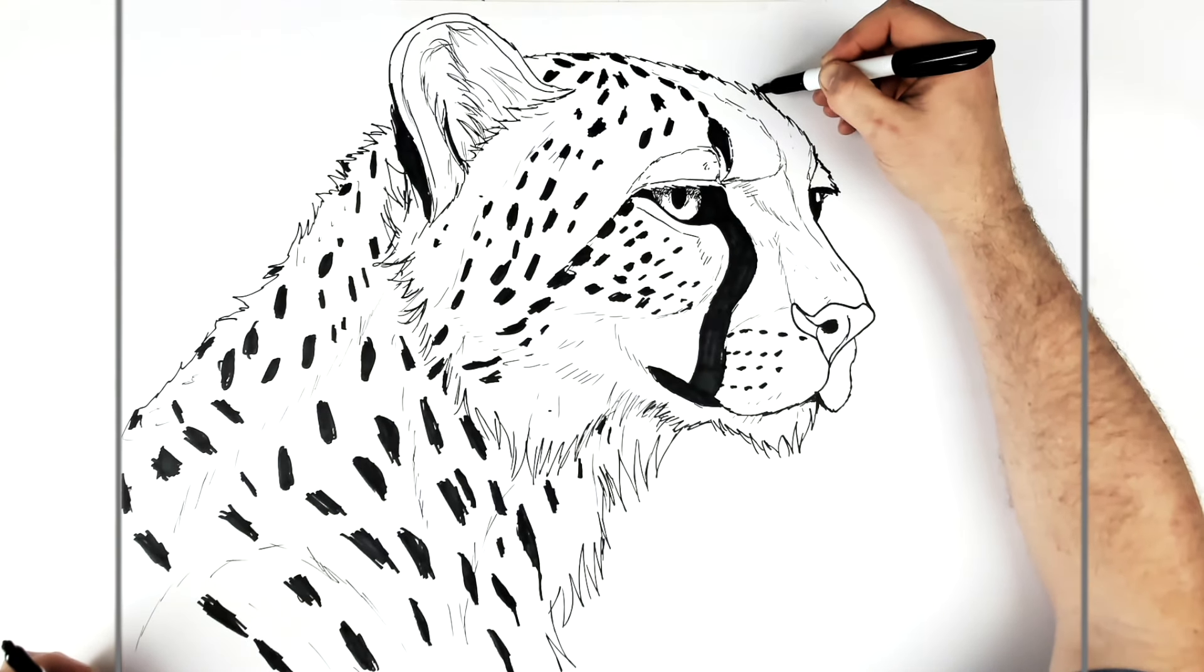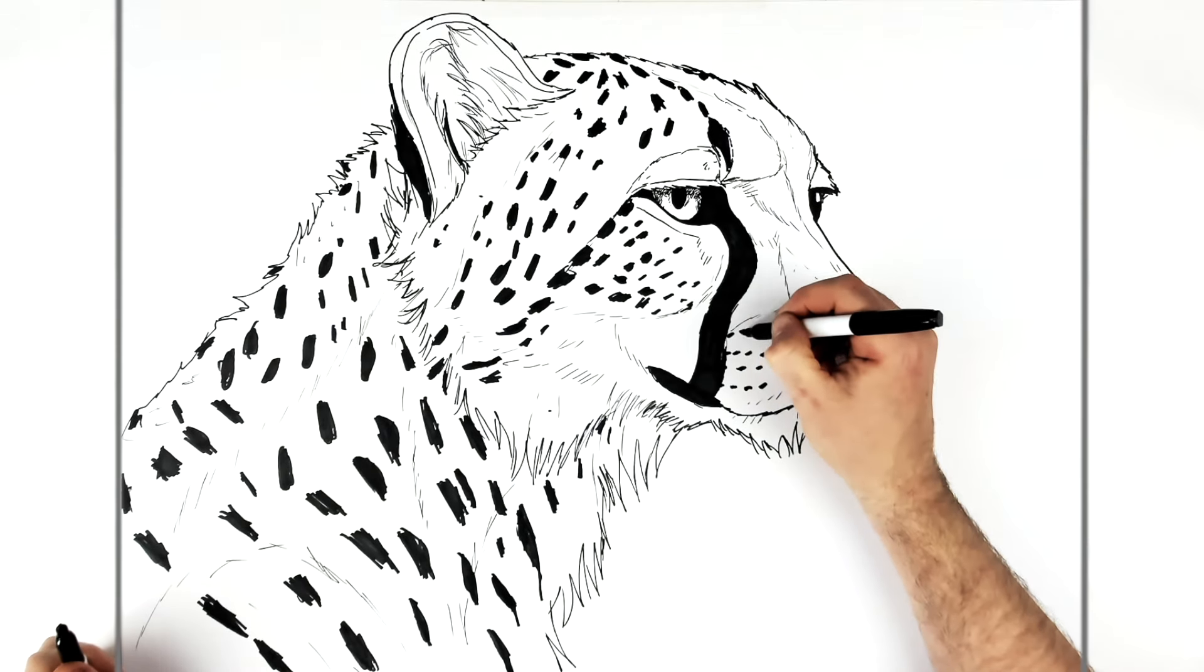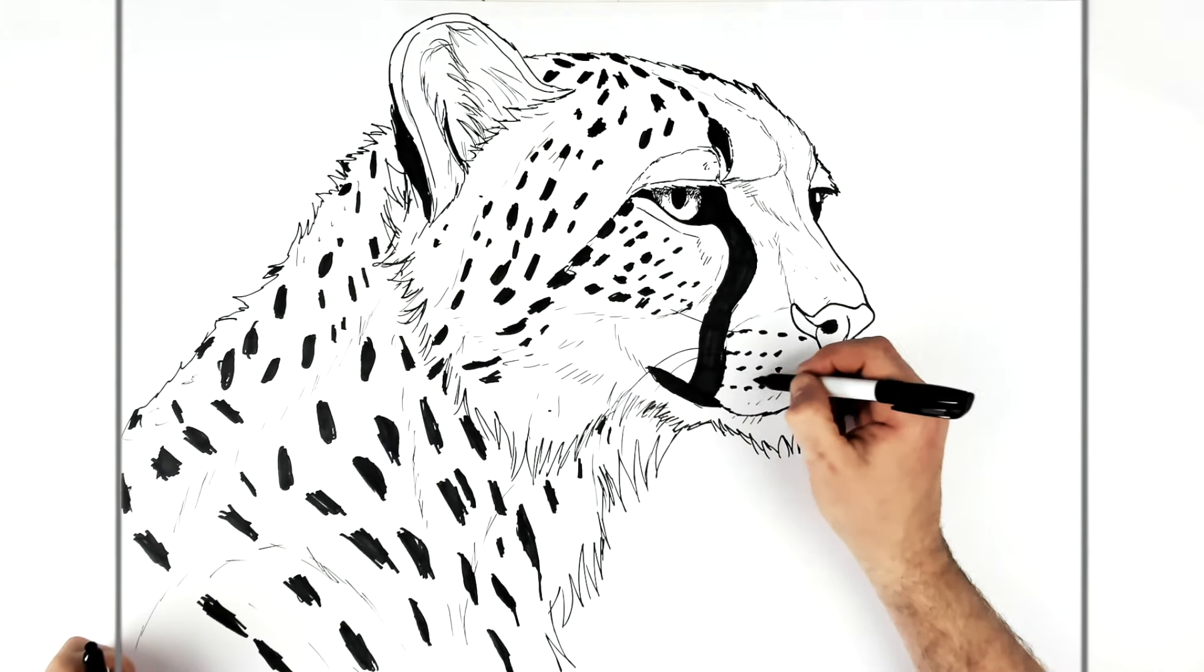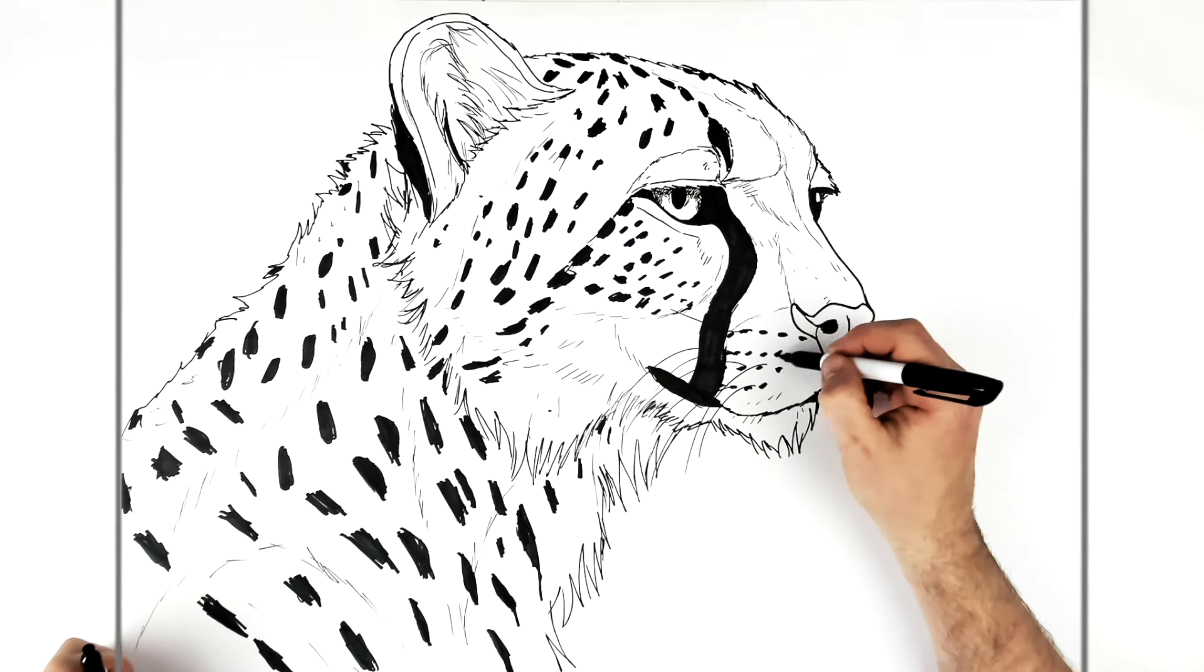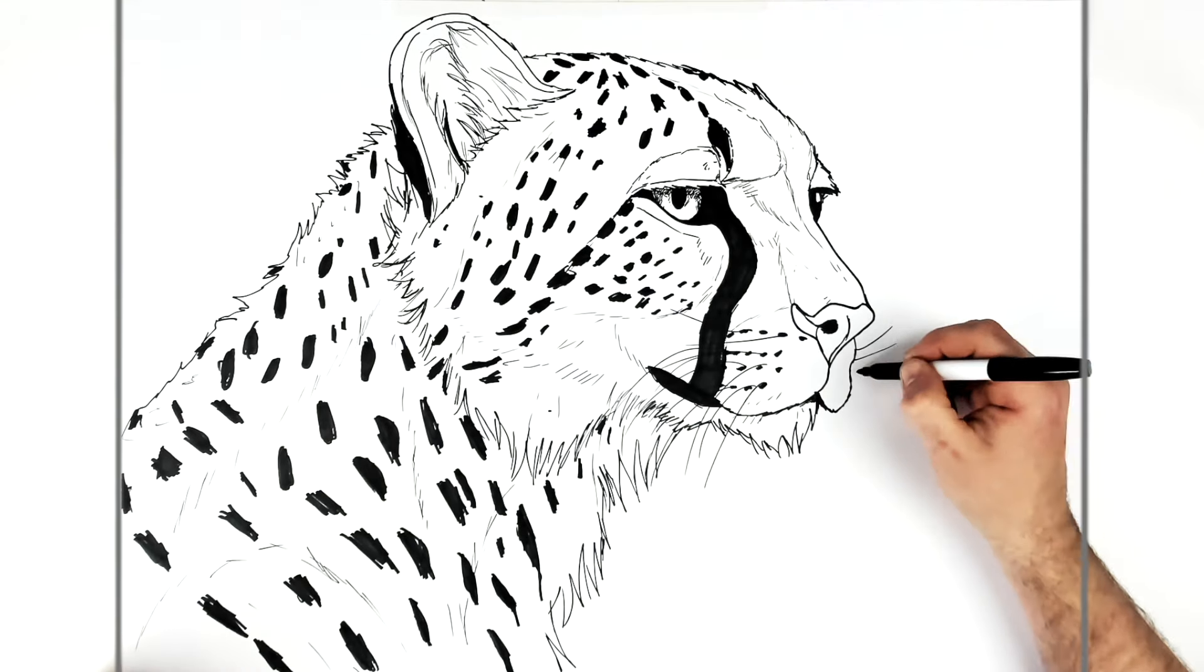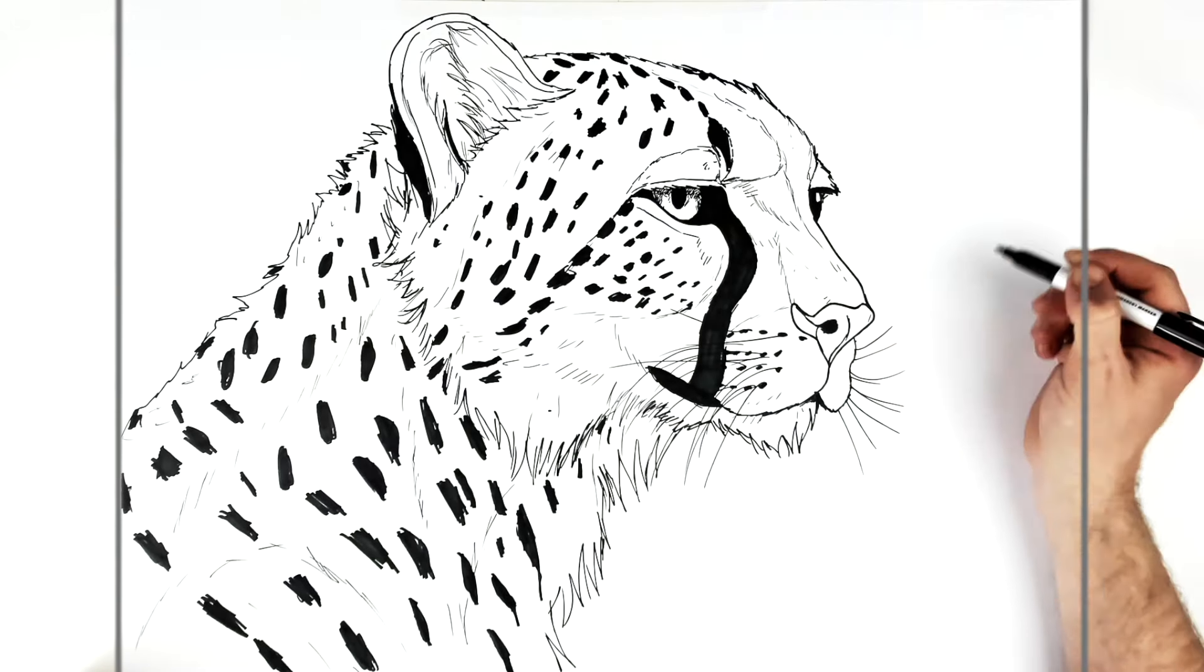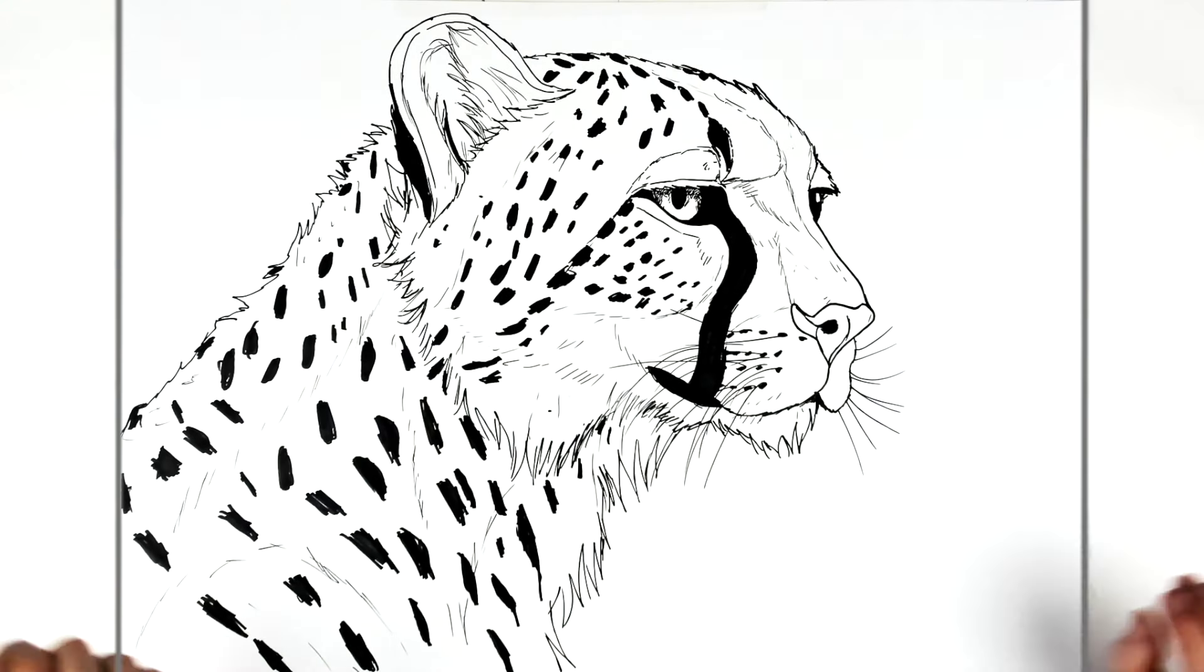Any details you want to add after that, like whiskers we can do. It's surprising how much I forget whiskers. Of course, if you're coloring this guy orange, these would be done in white. But I think that'll do. That's how to draw a cheetah from the side. Hope it's helpful. Thanks for watching, see you in the next one. Bye.